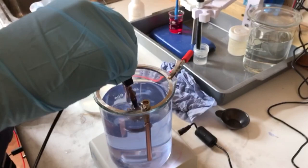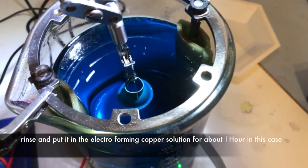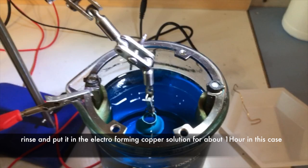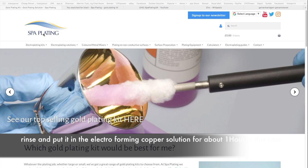When we're done with this, you can see the copper's already forming on there. Take it out, rinse it again, and go straight into the normal electro forming copper solution. I'll show you now how to work it out because the settings are different.